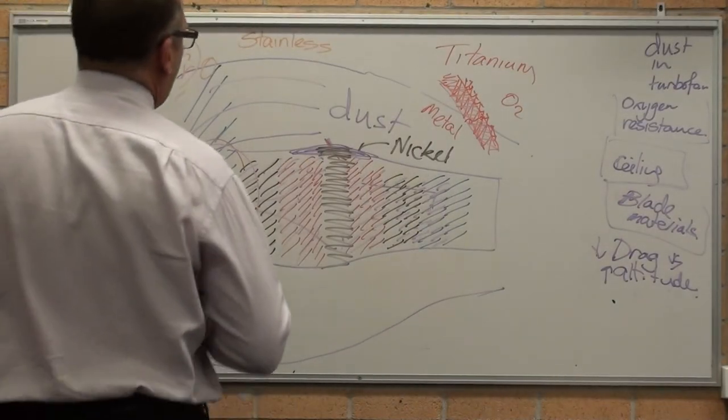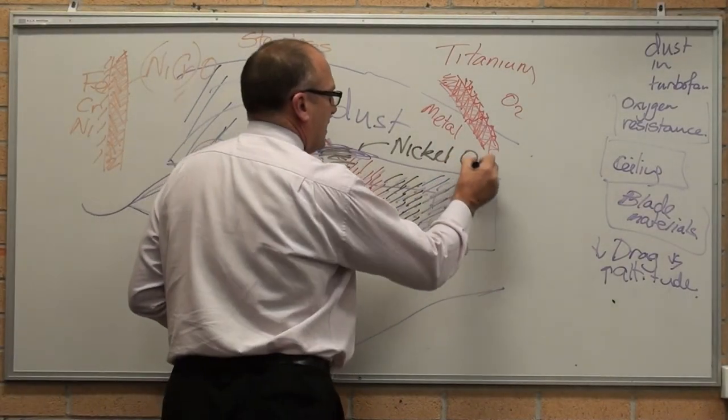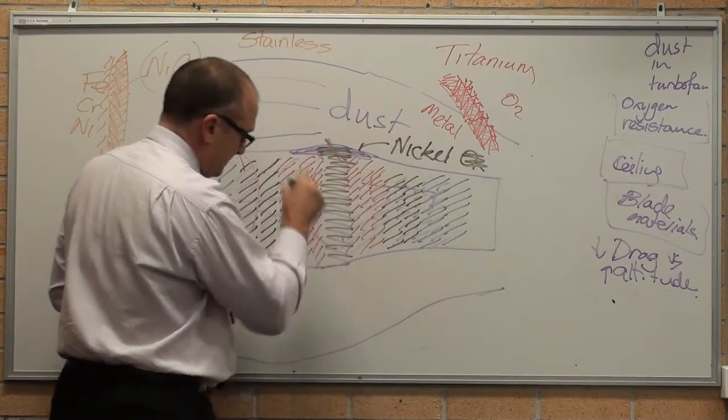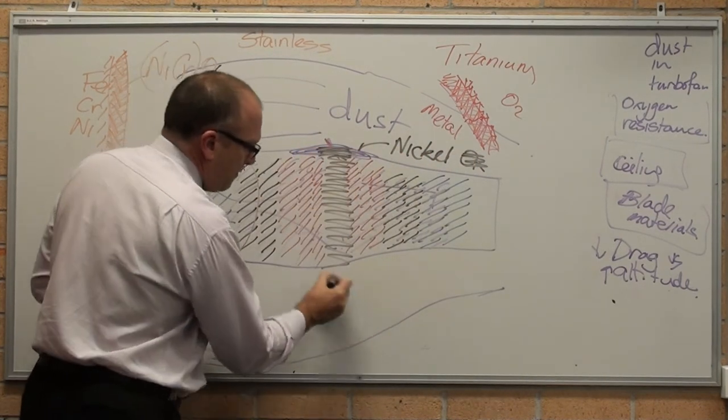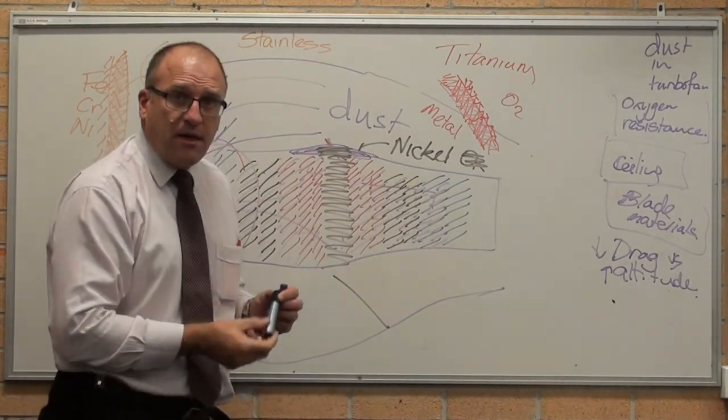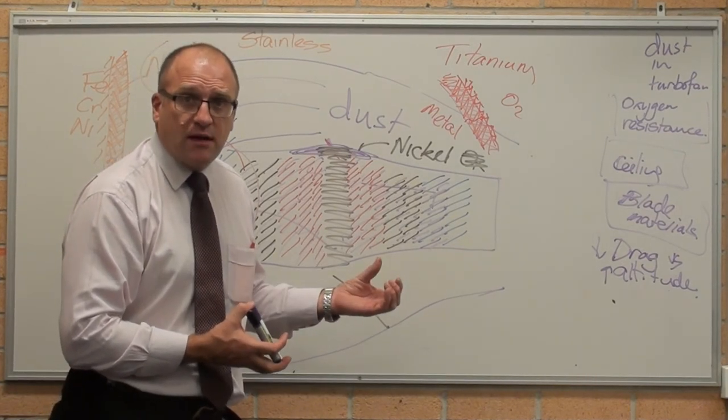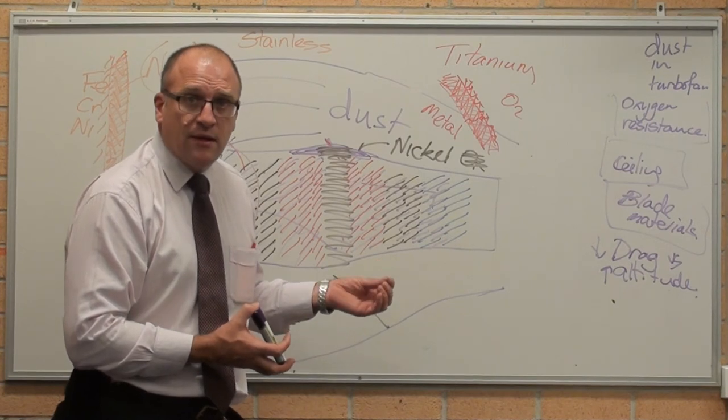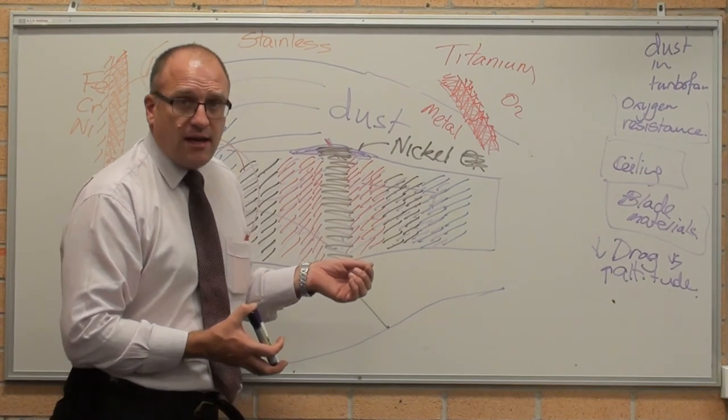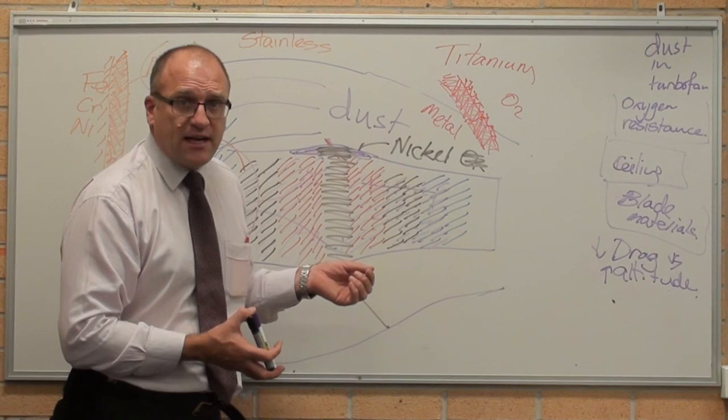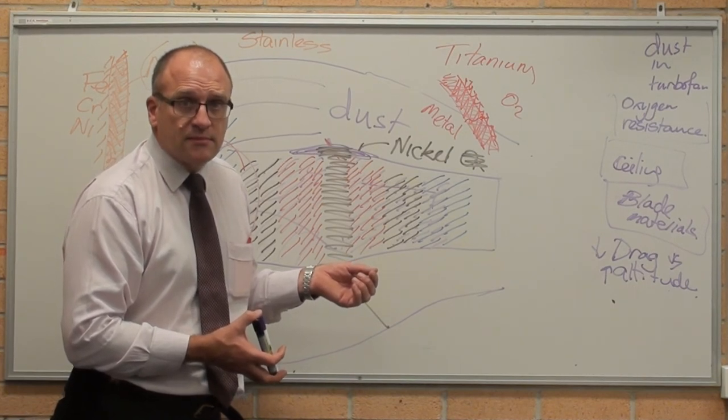So, the nickel oxides, that green layer, they form at high temperatures and protect the metal. As well as the metal having sufficient high temperature strength to survive in the application. That's materials used in an aircraft engine or a jet engine. Covered.